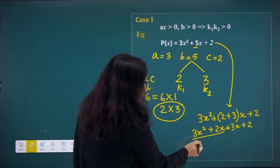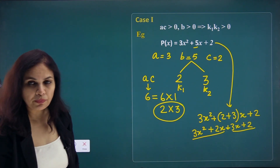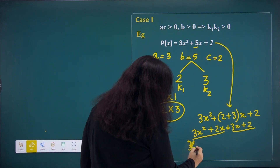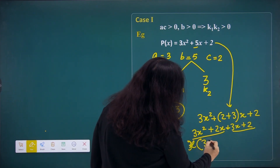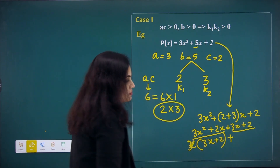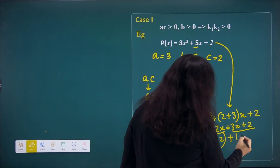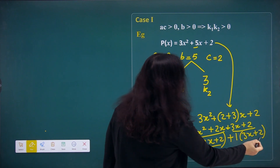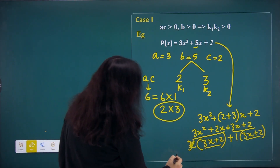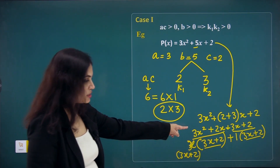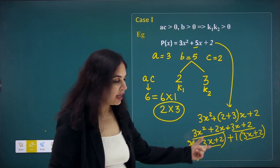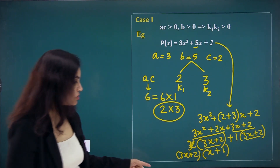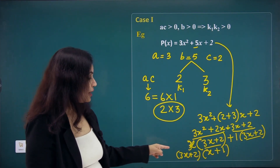The expression is now a quadrinomial of 4 terms, which we factorize by grouping. From the first two terms, taking x common gives x(3x + 2). From the last two terms, since they are co-prime, taking 1 as common gives 1(3x + 2). Both groups share the factor (3x + 2), so taking it common gives the final factorization: (3x + 2)(x + 1).